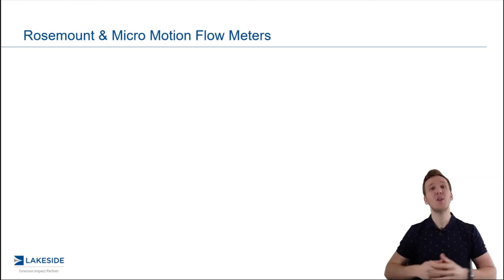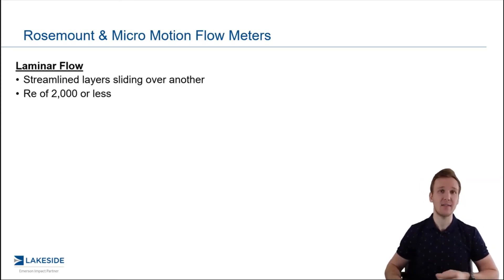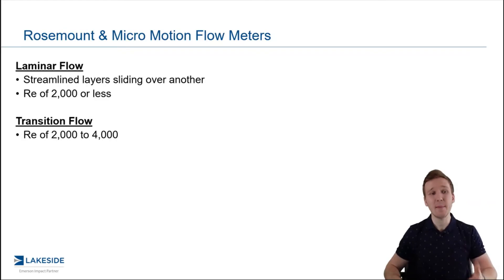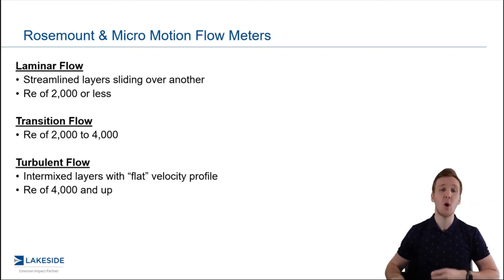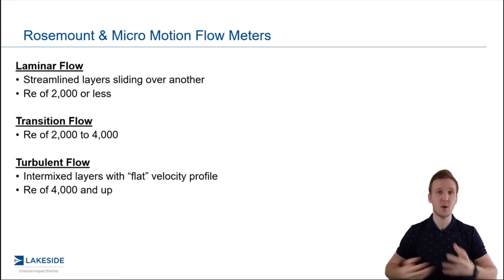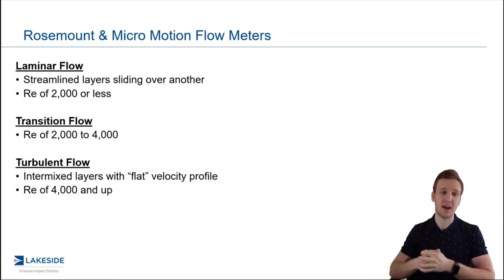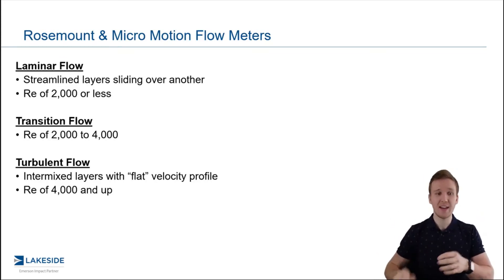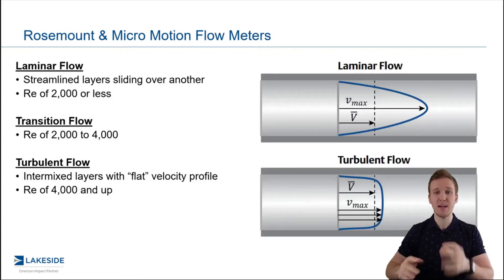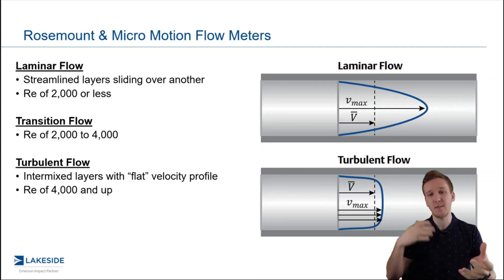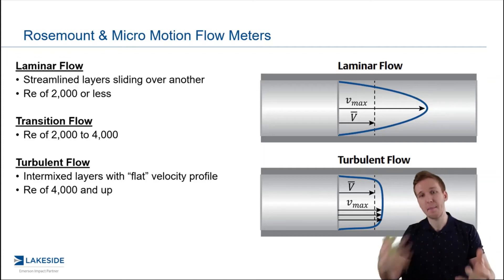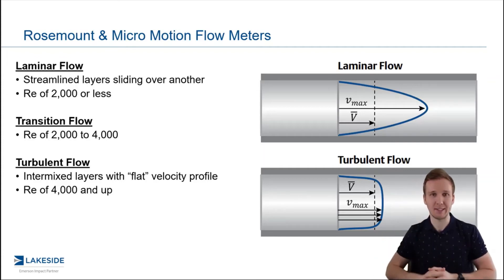Now, depending on the Reynolds number that you have in your system, it will impact how it's classified. Is it laminar flow, is it transition flow, or is it turbulent flow? This is going to depend on whether your Reynolds number is 2,000 or less, 2,000 to 4,000, or above 4,000. And the difference, as you can see depicted here, really has to do with the average velocities versus the maximum velocity in the piping system.